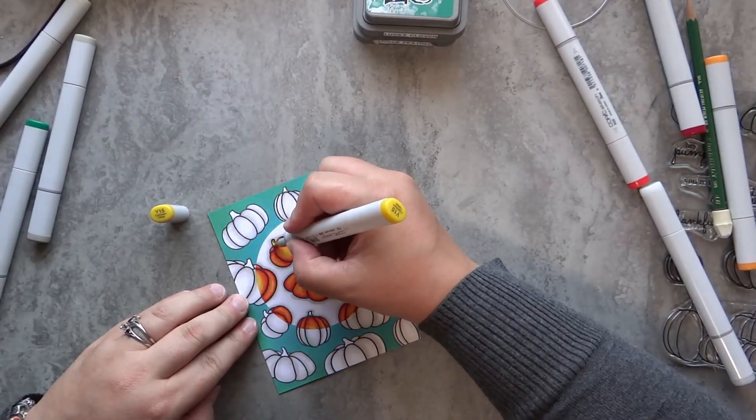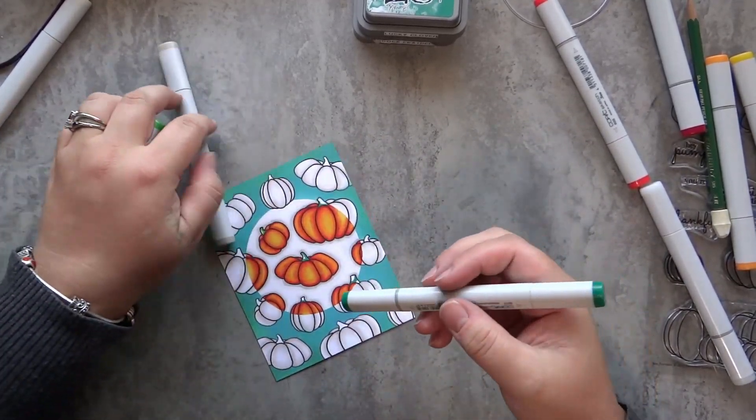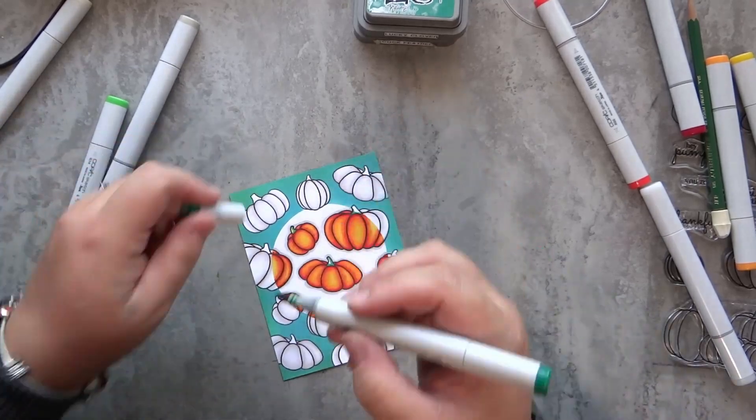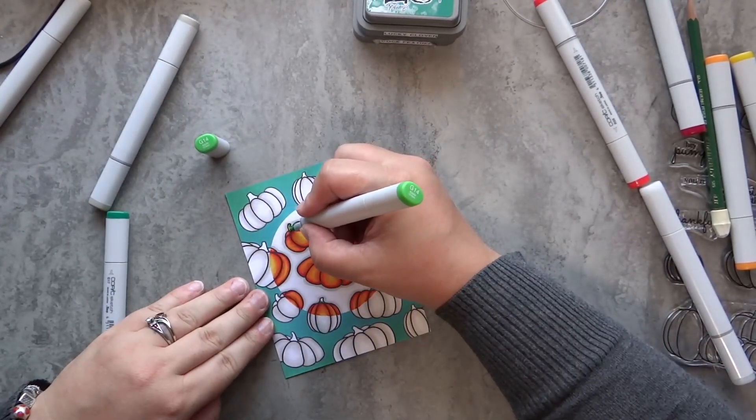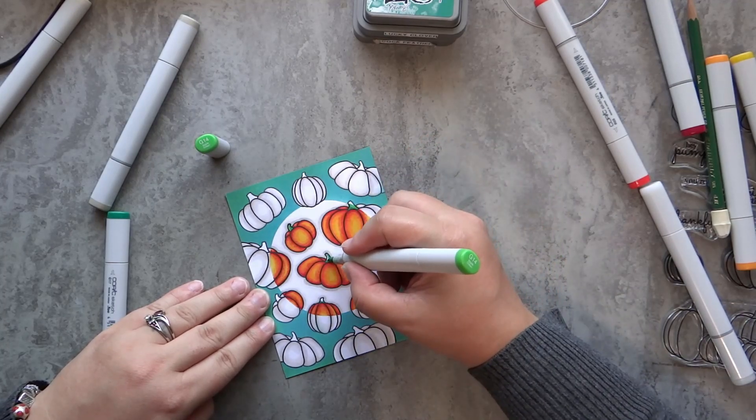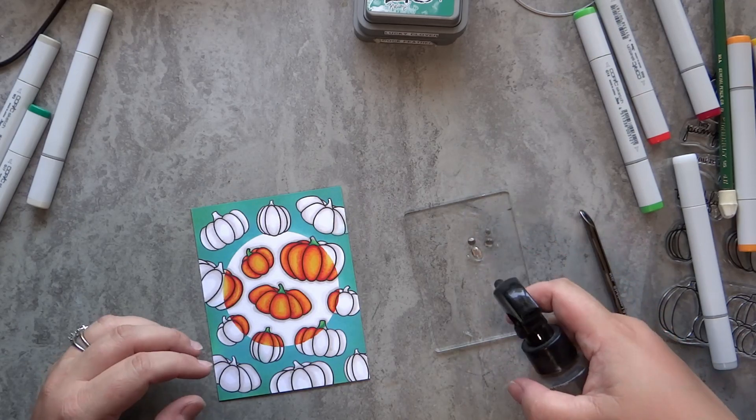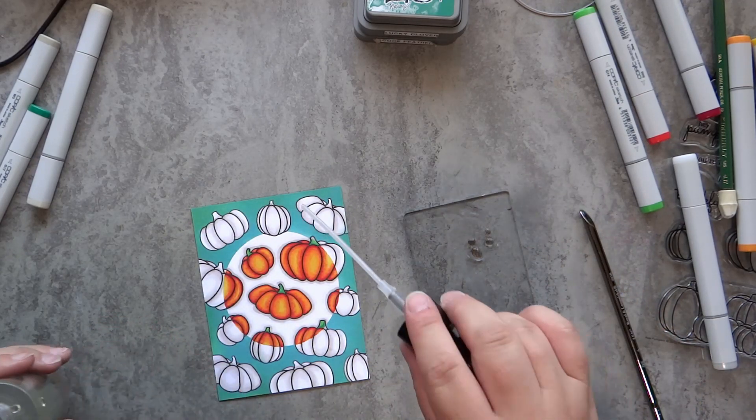And now I can remember to color in the stems, which at this point is really easy to see where to color because basically I have given myself a good line to follow. I use G17 and G14 for the stems of those pumpkins.